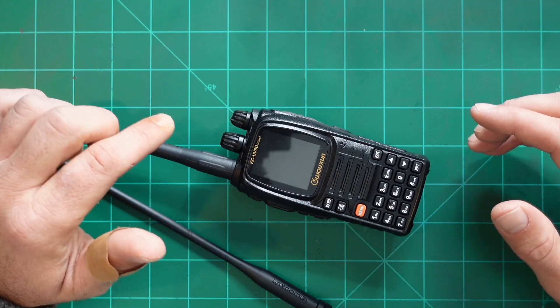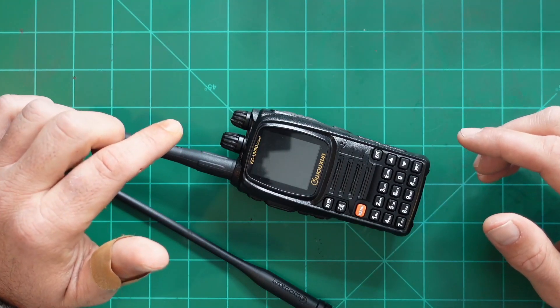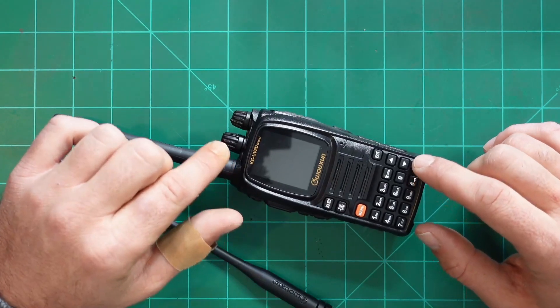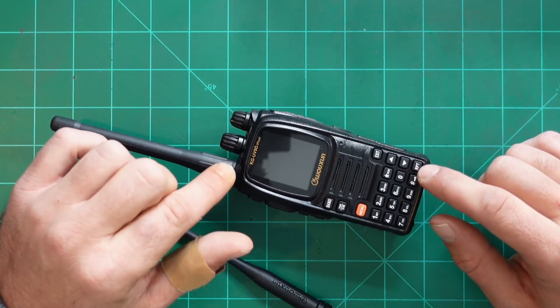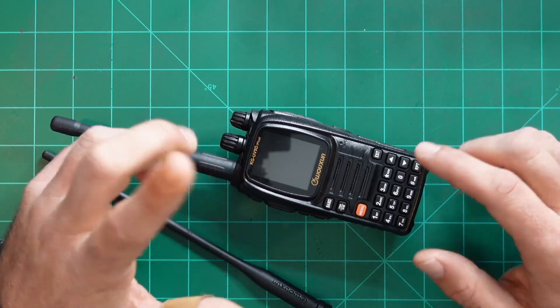136 megahertz to 180 FM, 230 to 250 FM, 350 to 400 FM, 400 to 512 FM, 700 through 823 FM with the cellular range blocked.